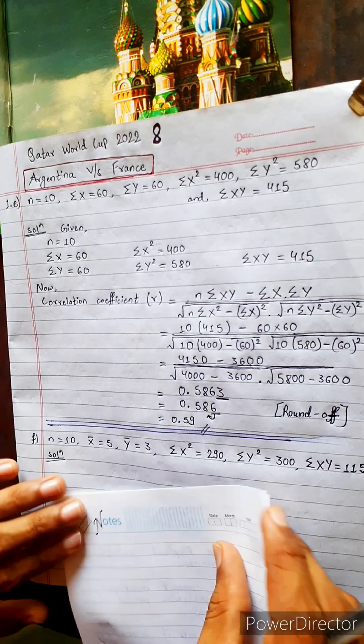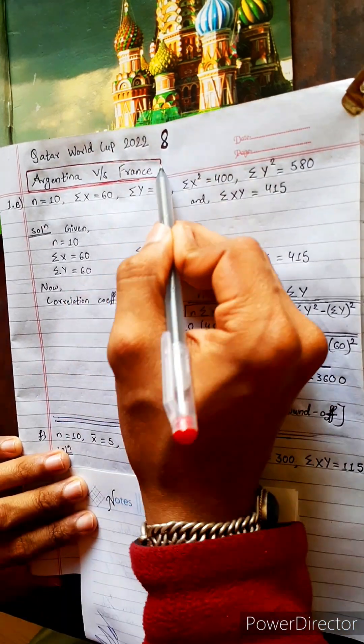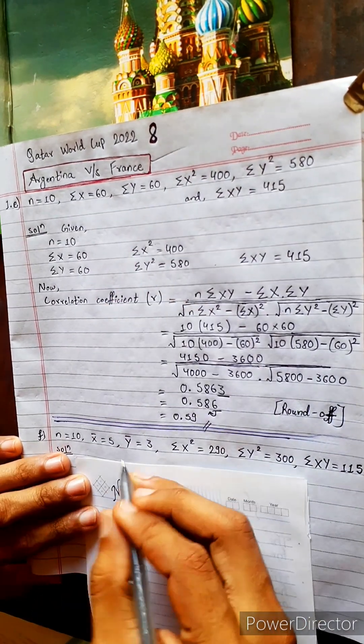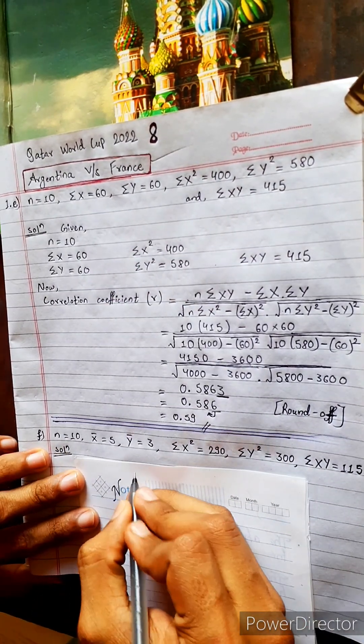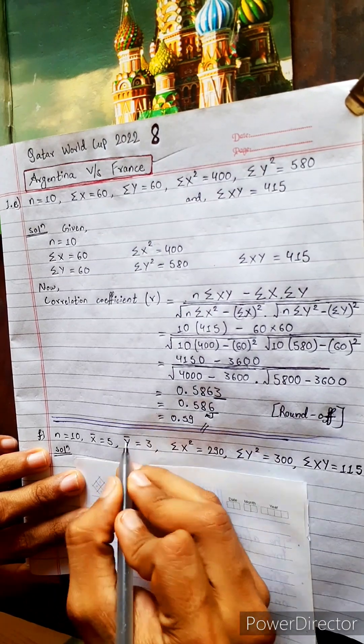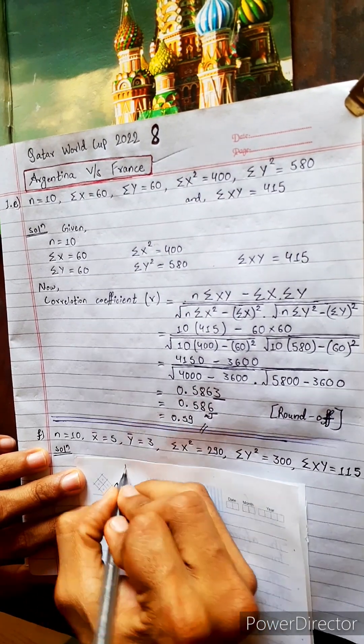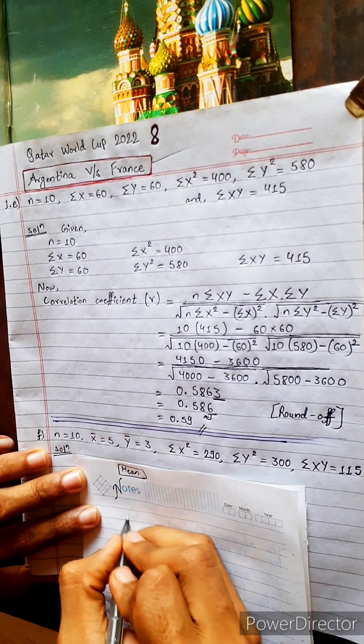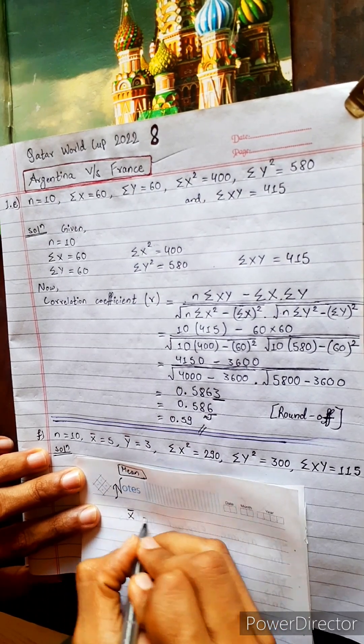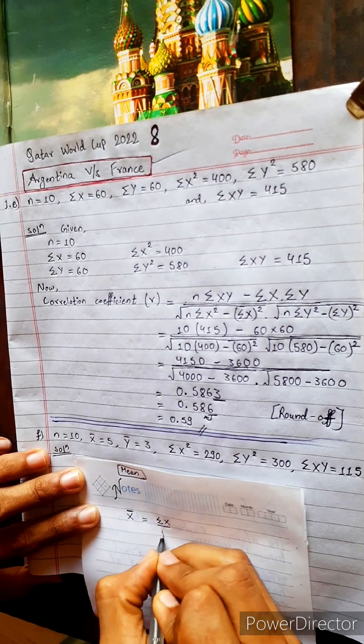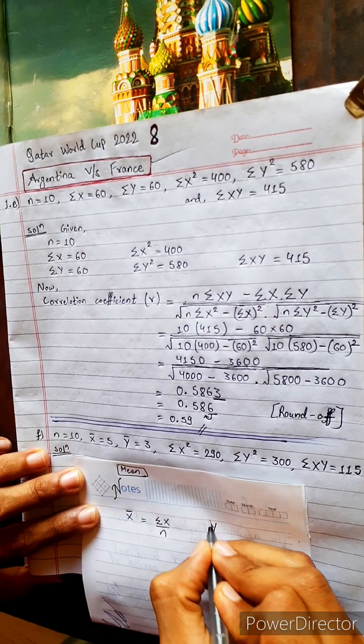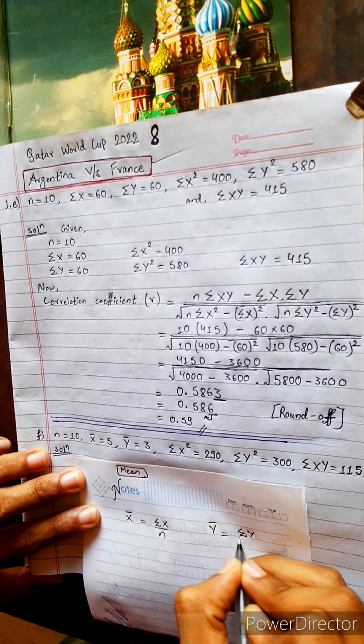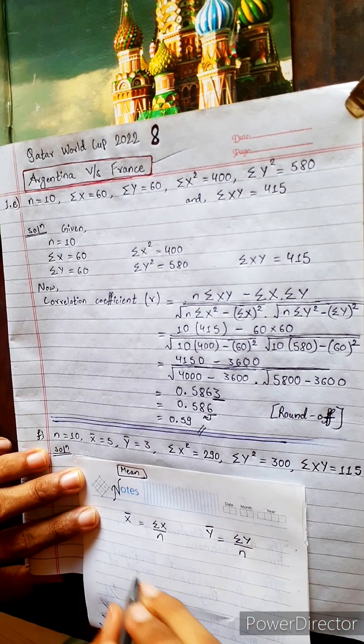This is also not so difficult. Look, today we will look at this France versus Argentina. But now look, your x bar, y bar is given. Mean is given, okay. Then we have to know the formula of mean: x bar equals to summation x by n, similarly y bar equals to summation y divided by n.